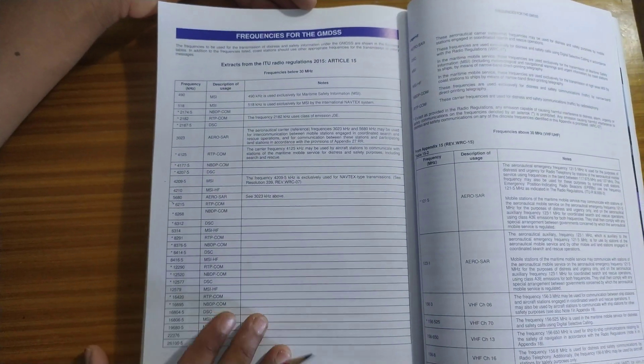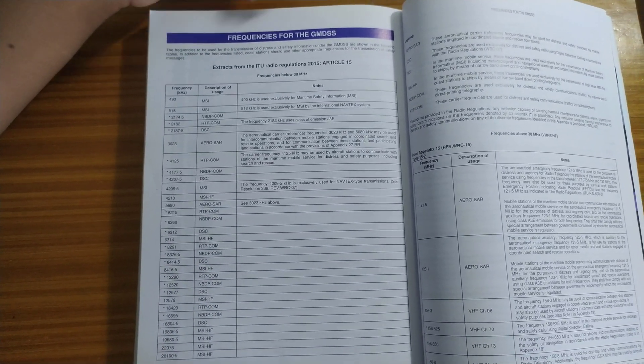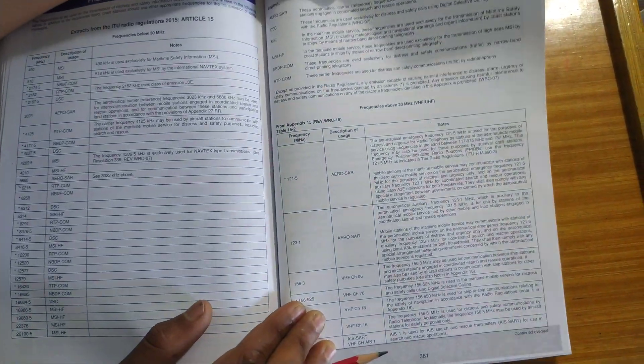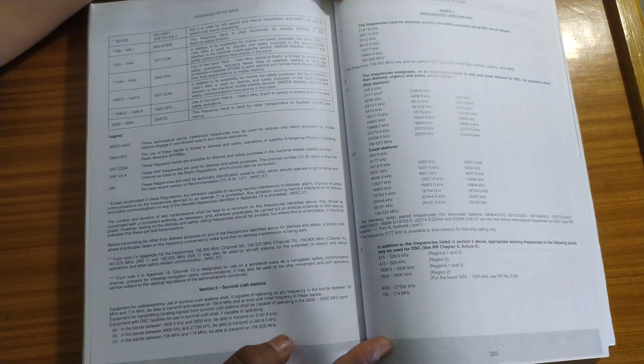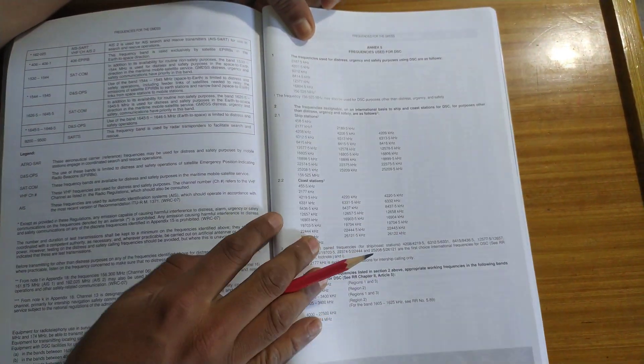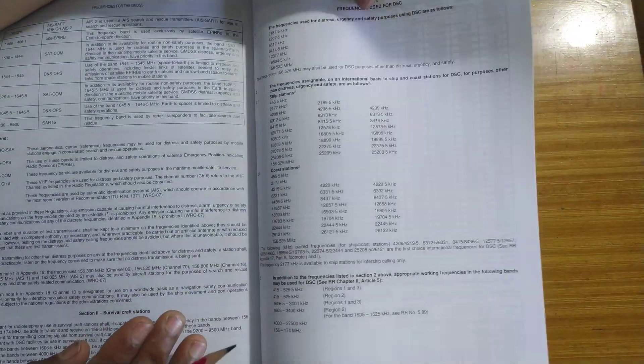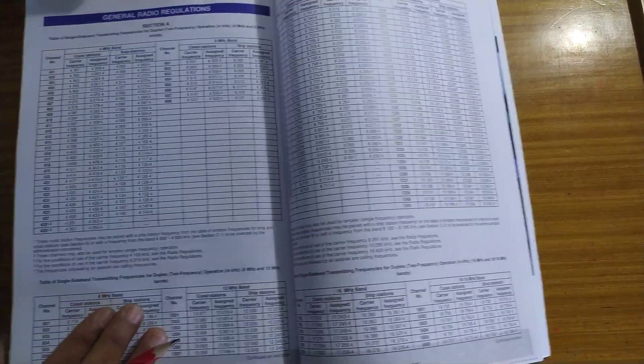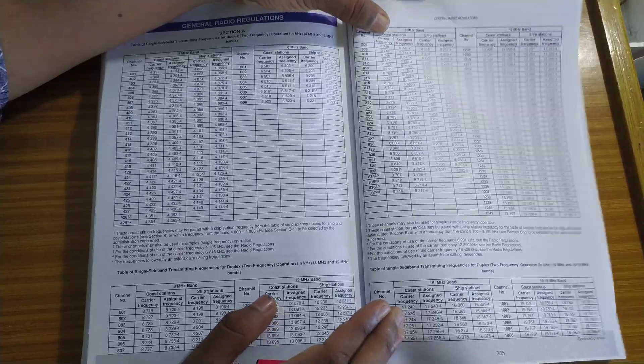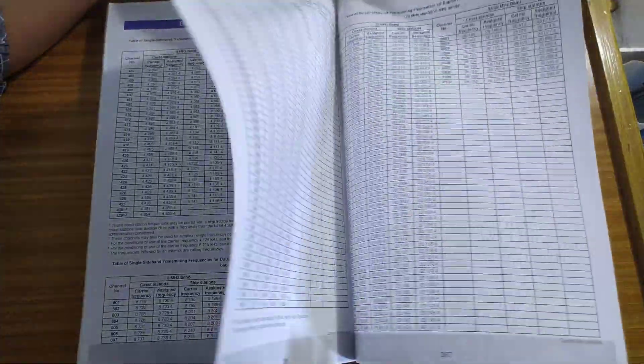Then comes the frequency for the GMDSS. They are giving you the table of frequencies. It's an extract of the ITU table. Just glance through it. Then comes frequency used for DSC. After this comes general radio regulations. These are all basically frequencies. I will skip through it.